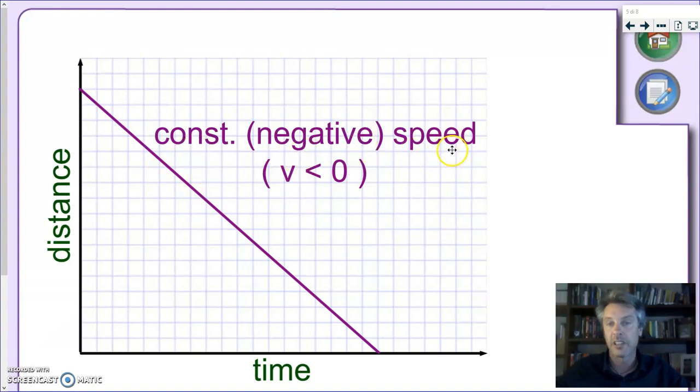What we say here is that the speed is constant, but it's a negative constant speed. Or, we can say that V is less than zero. It's a negative number.